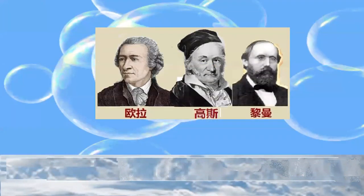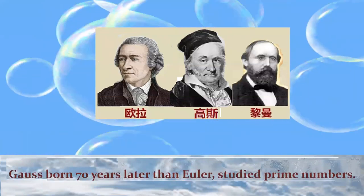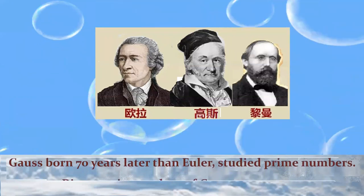Gauss, born 70 years later than Euler, also studied prime numbers. Riemann is a student of Gauss, very smart, but unfortunately died at the age of 39.